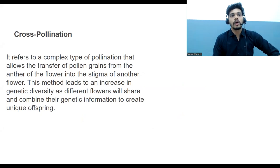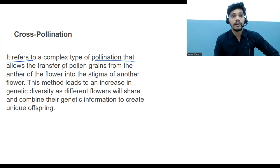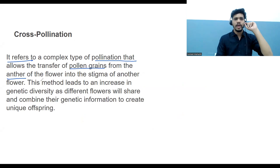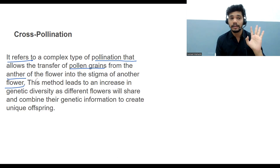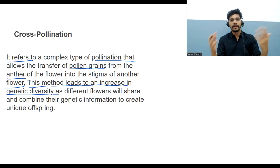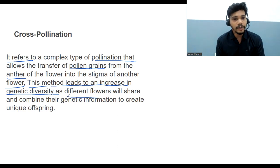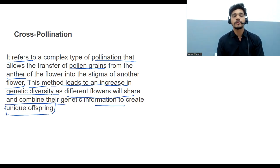Cross-pollination refers to a more complex type of pollination that allows the transfer of pollen grains from the anther of one flower to the stigma of another flower. This method leads to an increase in genetic diversity because different flowers share and combine their genetic information to create unique offspring.